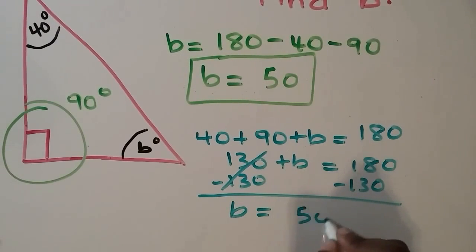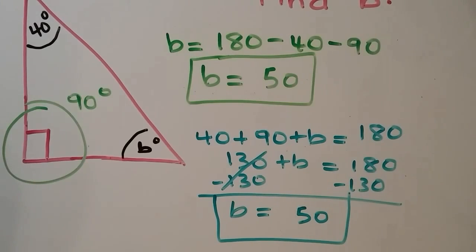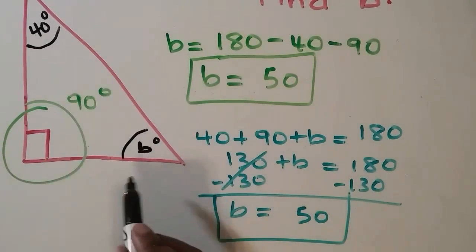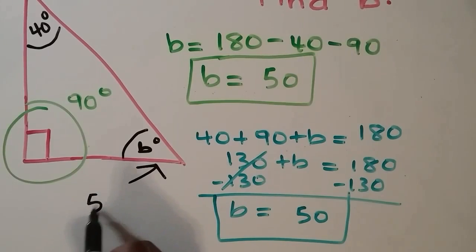To be completely honest, the second method is a bit tedious. So I would just use the first method because you get the same answer. And again, b is equal to 50 degrees.